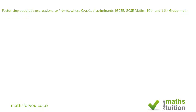Welcome to this exercise on factorizing quadratic expressions. In this particular case we're looking for situations where the coefficient of x squared is greater than one or less than zero. We shall be using discriminants in trying to solve this problem, and it is suitable for IGCSE, GCSE mathematics, and for 10th grade and 11th grade maths.